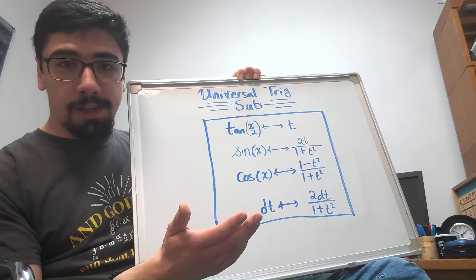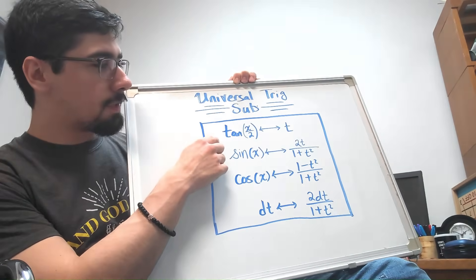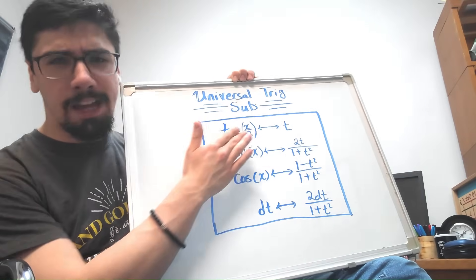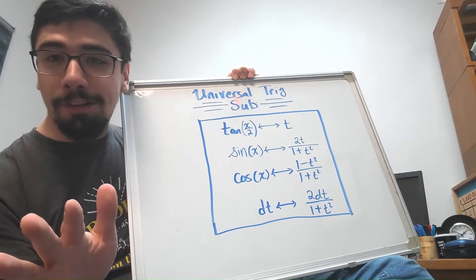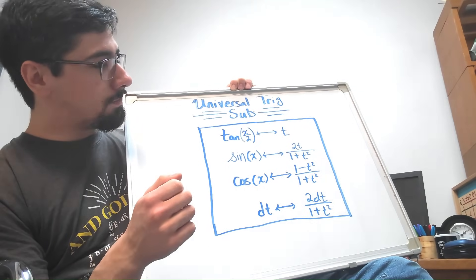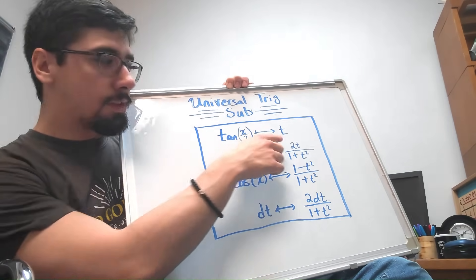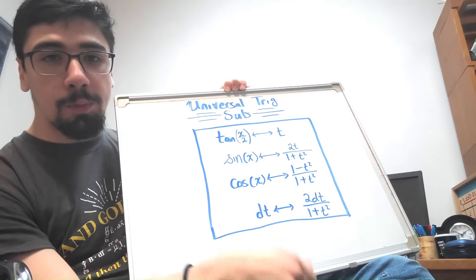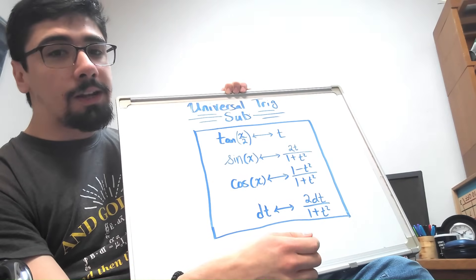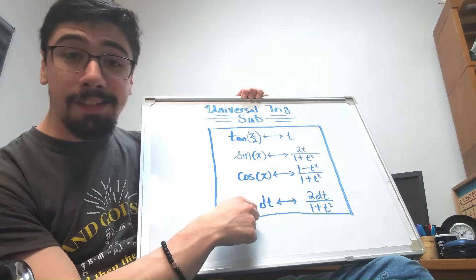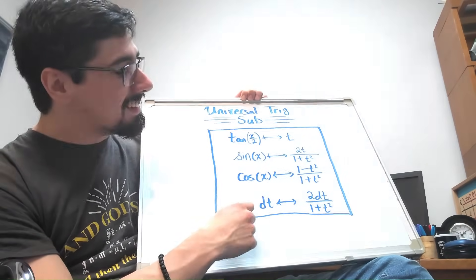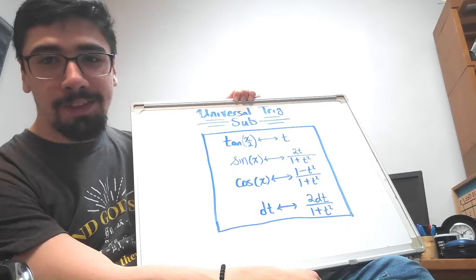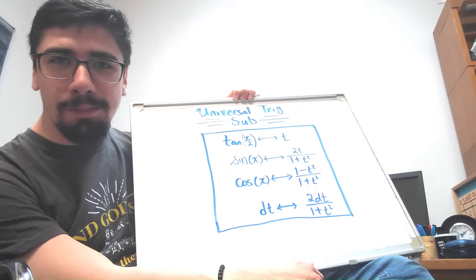And the way that it works is that you replace tangent of x over 2 with t, and already the substitution looks really weird. Why are we doing the half angle of tangent? We'll talk about that later in the video. And then you get that sine of x is replaced with 2t over 1 plus t squared. You replace cosine with 1 minus t squared over 1 plus t squared. And finally, your differential dx gets replaced with 2 dt over 1 plus t squared. Let's go ahead and see some examples of this substitution in practice.